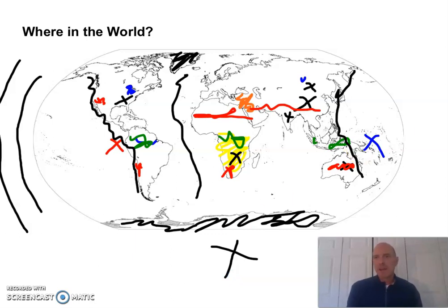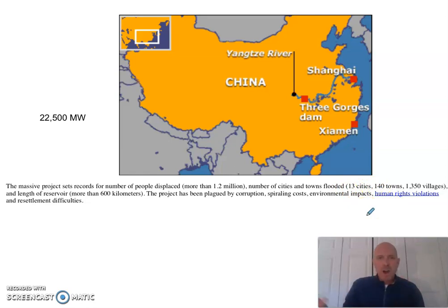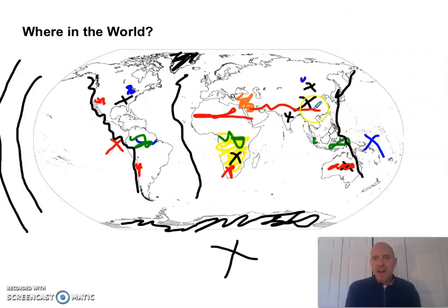Last thing to mark: the Three Gorges Dam in China. It's a huge dam — clean energy, but it displaced millions of people as their valleys flooded. The stats: 13 cities, 140 towns, 1,350 villages all underwater. It completely wrecks havoc on the ecosystem. It produces 22,500 megawatts — that's 22.5 gigawatts, so know your conversions. Mark it right there in China. Not only does China have coal and the biggest dam, they also have a ton of solar panels and are working on nuclear power — because with so many people, they need the energy.